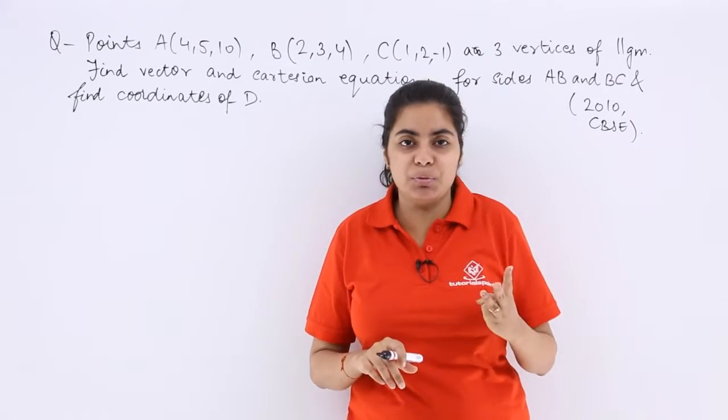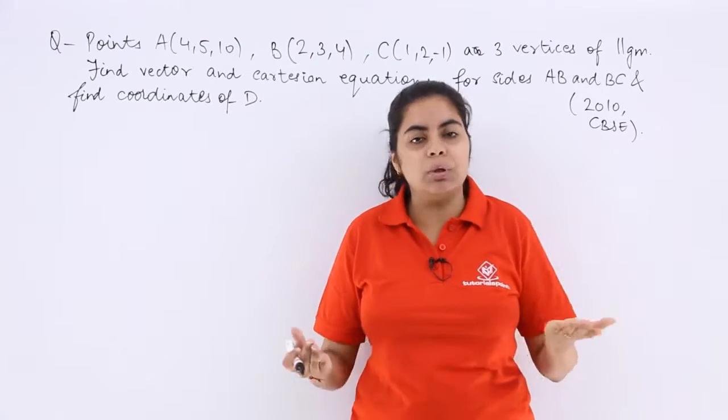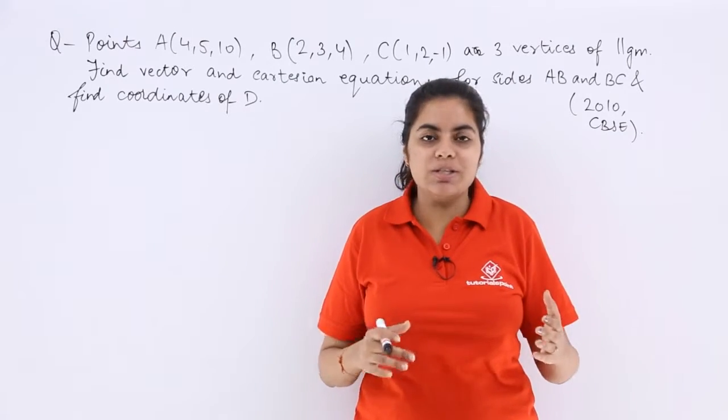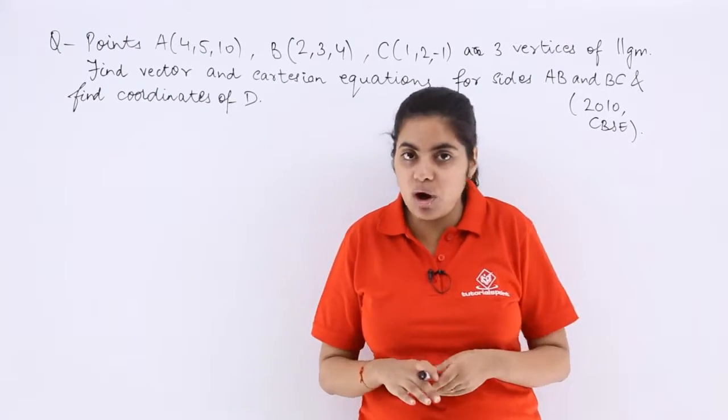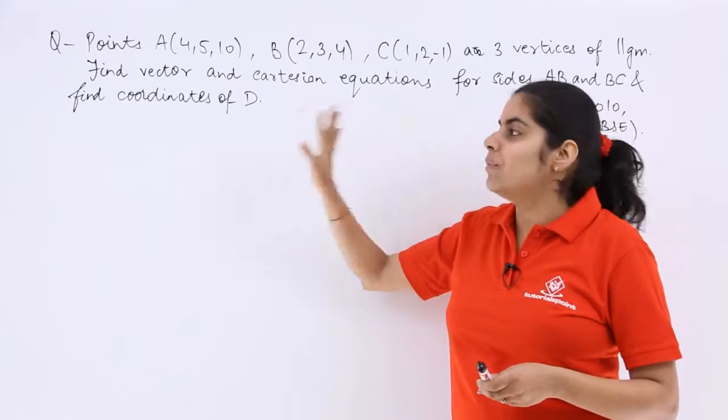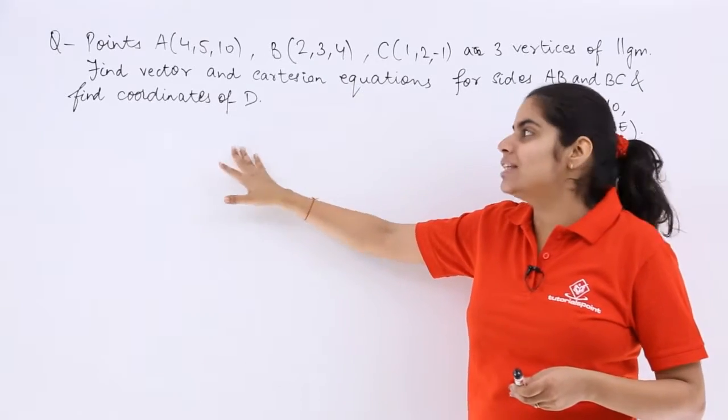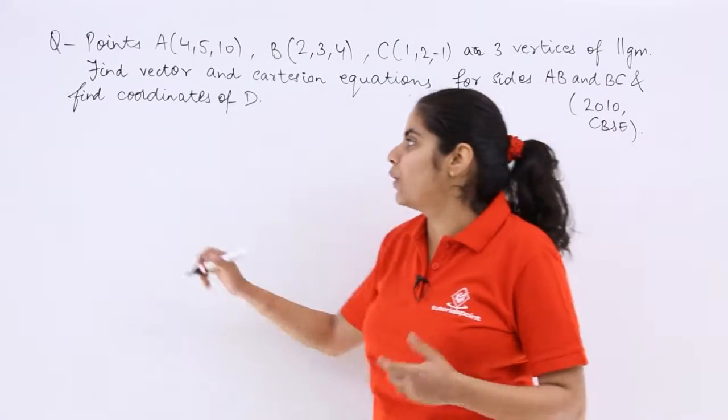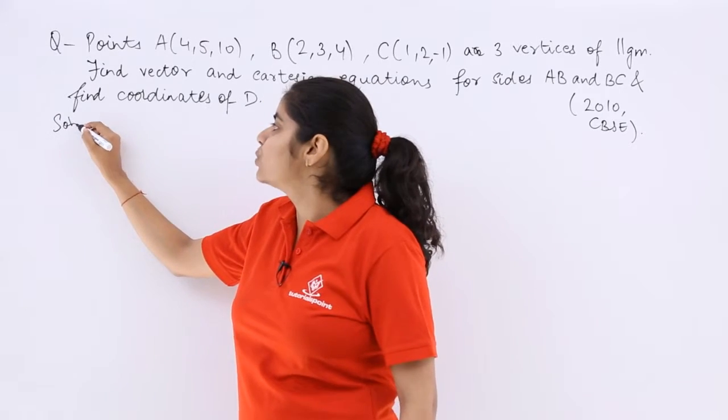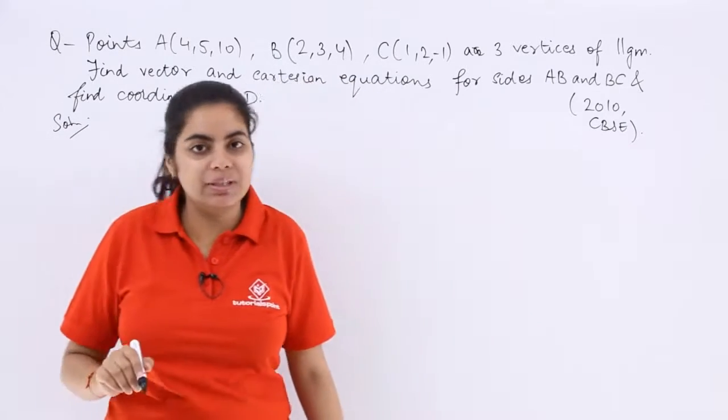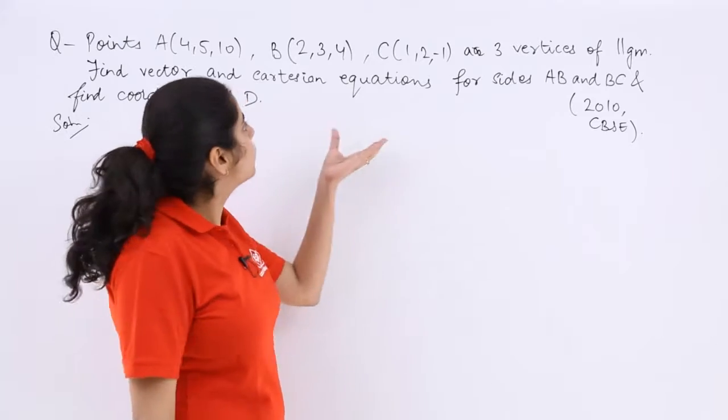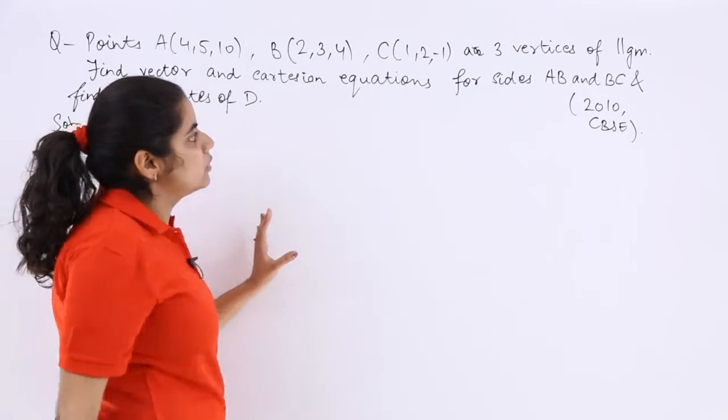Find the vector and Cartesian equations for the sides AB and BC, and find the coordinates of D. So three things have to be found out, a very lengthy question, probably a six marker. I write here solution and let's see what should be the answer and solution like.